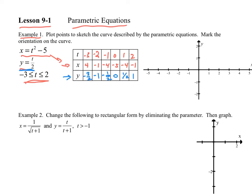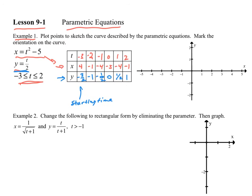So now what we have is a starting value — this is my starting time. With my starting time, I need to designate that on my graph. I'm going to plot the point 4, negative 3 halves. That's going to be my starting time. Then if I plot my next point at time negative 2, that's going to be negative 1, negative 1 — right here. That would be my next value. Then at time negative 1, I'm going to get negative 4 and negative 1 half.